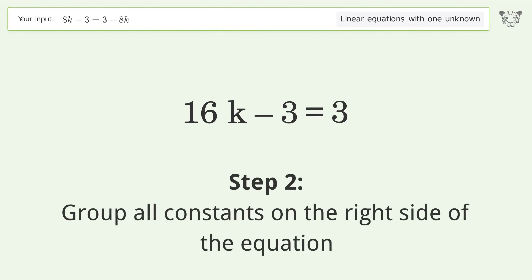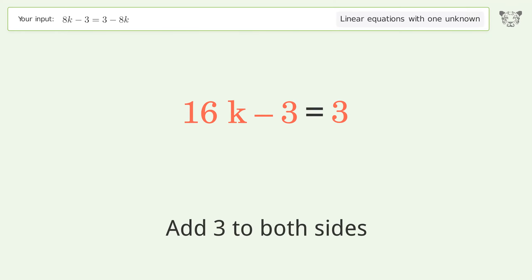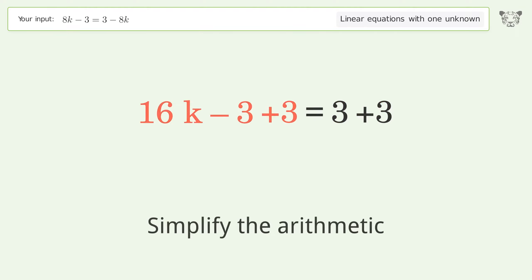Group all constants on the right side of the equation. Add 3 to both sides. Simplify the arithmetic.